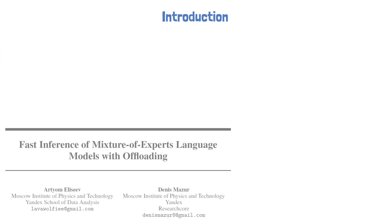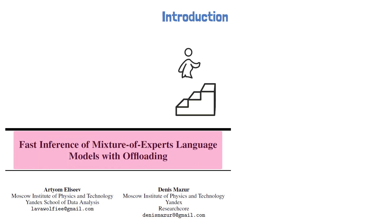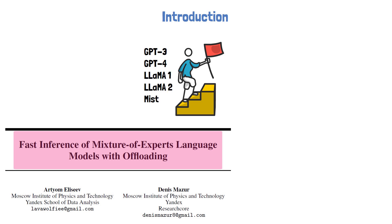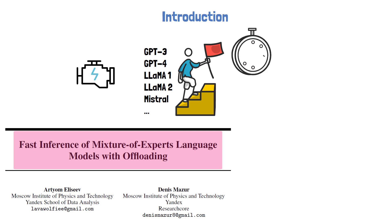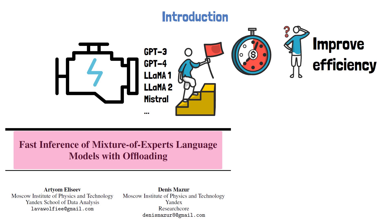Thank you for joining this video about a new research paper titled 'Fast Inference of Mixture of Experts Language Models with Offloading.' In recent years, large language models are in charge of remarkable advances in AI, with models such as GPT-3 and 4, which are closed source, and with open source models such as LLaMA 1 and 2. However, as we move forward, these models are getting larger and larger, and it becomes important to find ways to improve the efficiency of running large language models.